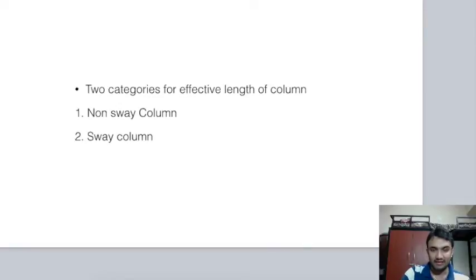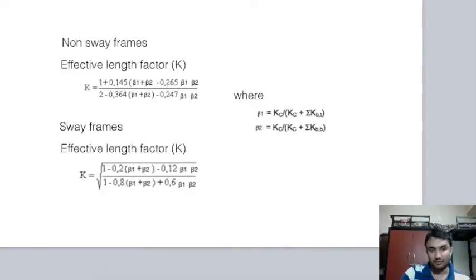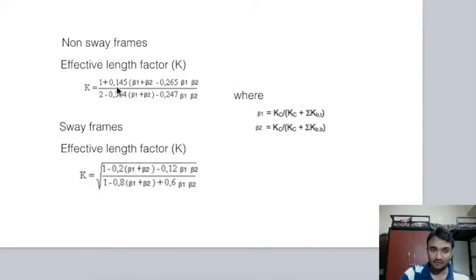This method lets us find the exact effective length of structural members. For non-sway frames, the effective length factor is: k = [1 + 0.145(β1 + β2) − 0.265·β1·β2] divided by [2 − 0.364(β1 + β2) − 0.247·β1·β2].